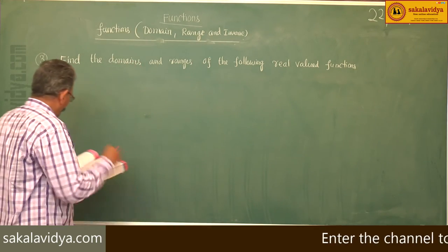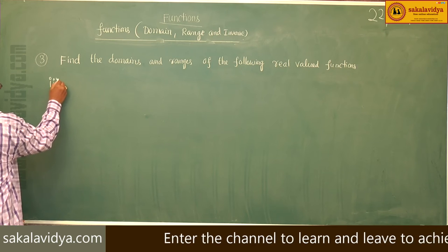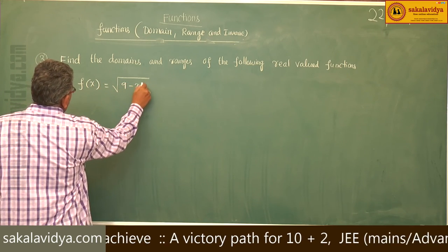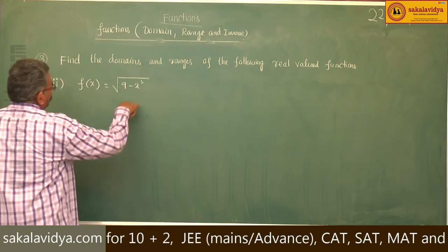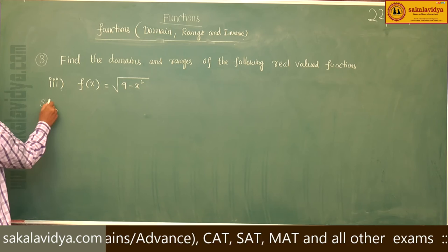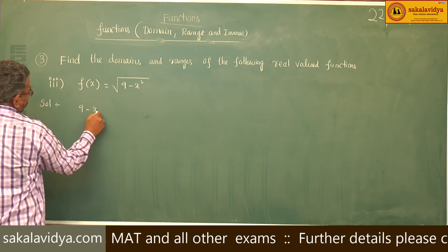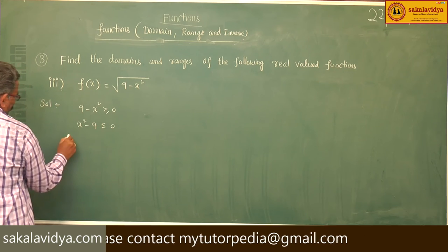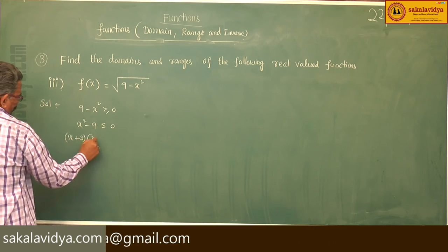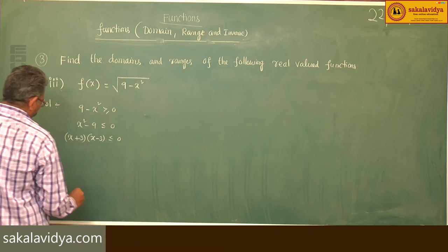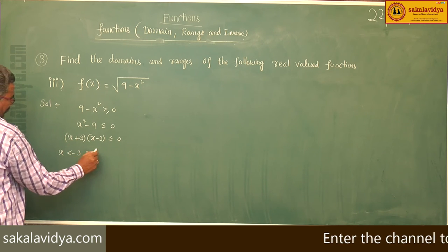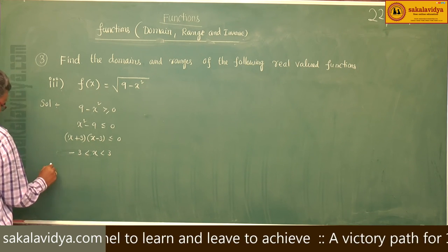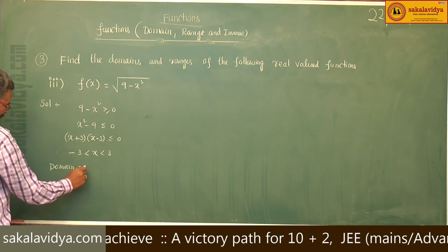Third problem: f of x is equal to root of (9 minus x squared). We have to find the domain and range. This function is defined when 9 minus x squared is greater than or equal to 0. So x squared minus 9 is less than or equal to 0, which is (x plus 3)(x minus 3) less than or equal to 0. That means x lies between minus 3 and 3. So domain is equal to [−3, 3].